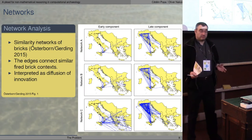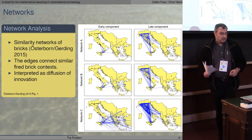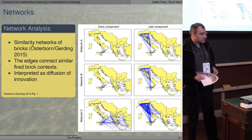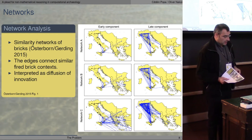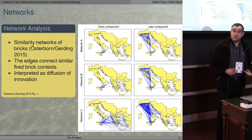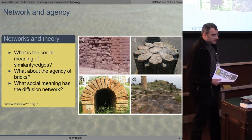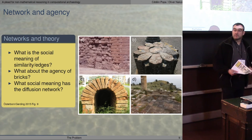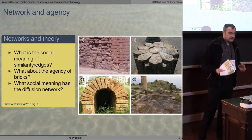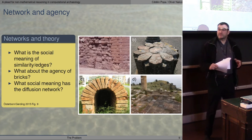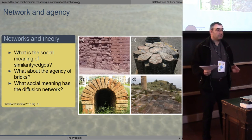Here we have a simple example: network analysis. This is a rather good paper presenting a similarity network of fired bricks. But there is something missing — we could also employ theory, which would help us answer questions such as: what is the social meaning of similarity in this example? What is the social meaning of the edges and the networks? What about agency of the bricks? We cannot answer those questions at the methodological level only; we have to involve theory to complete the study.